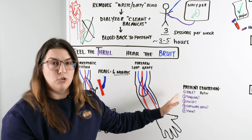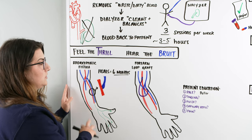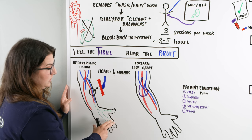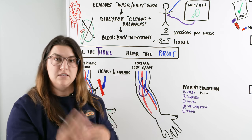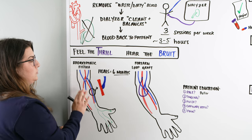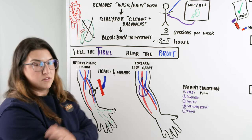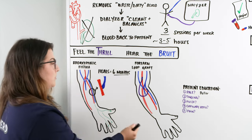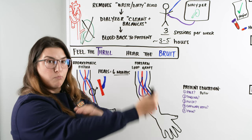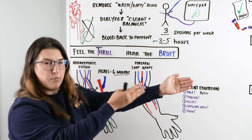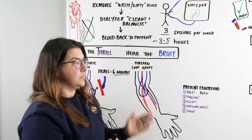One serious complication is AV fistula steal syndrome, where perfusion is completely taken away from the hand. When this occurs, we need to assess whether there is another site for a fistula. We want the fistula close to the vascular axis and close to the surface. Going further up the arm means more areas without adequate blood flow, so finding the right location is critical.